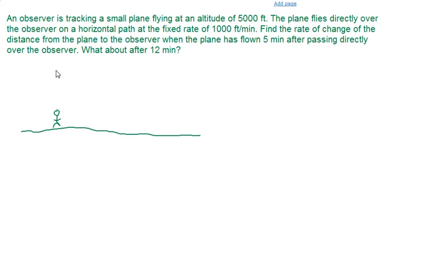So we have a plane up here somewhere. And we are told that the plane is 5,000 feet above the air. And it's flying horizontally. And we're told that it's flying at 1,000 feet per minute.